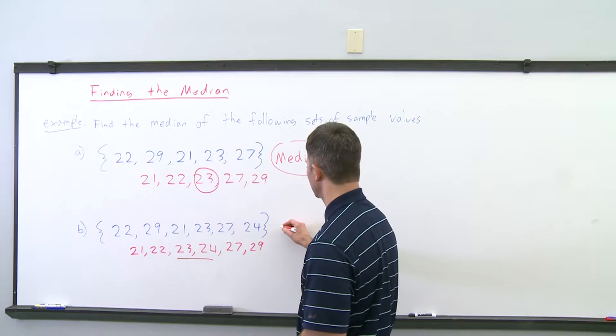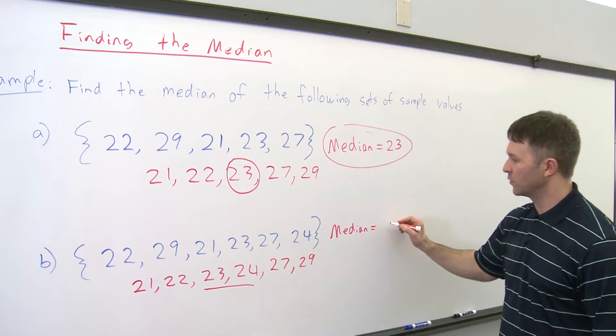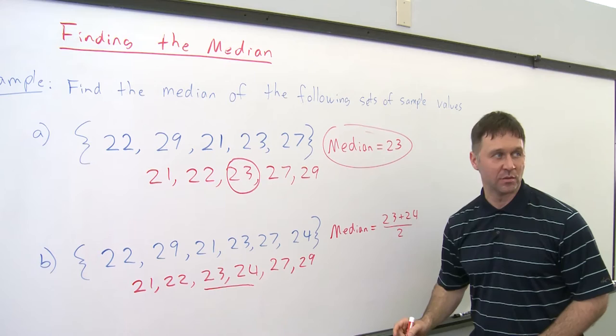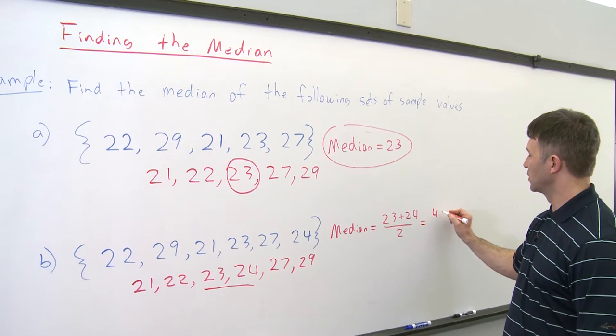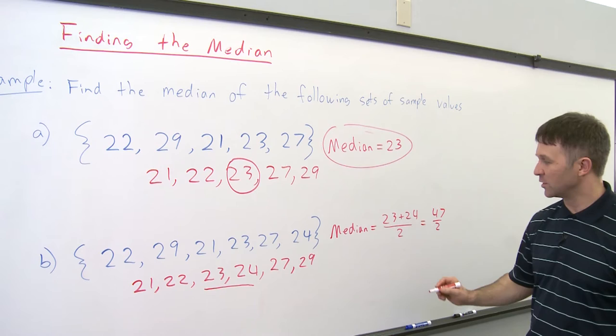And we're going to add them up and divide by 2 to find the median. So in this case, the median equals 23 plus 24 divided by 2. And if we add 23 and 24, that's going to give us 47 over 2. And if we then divide 47 by 2,